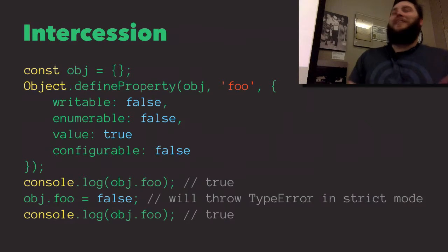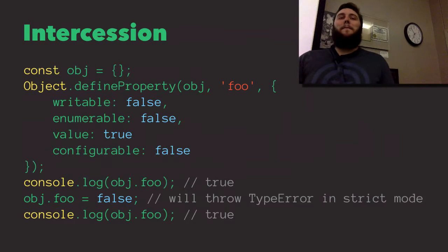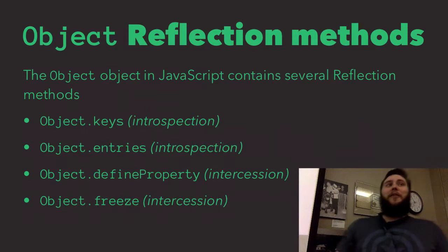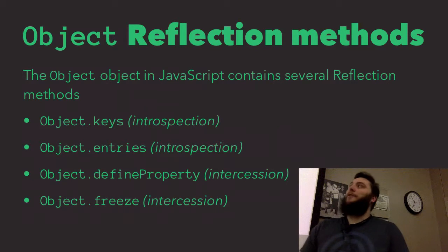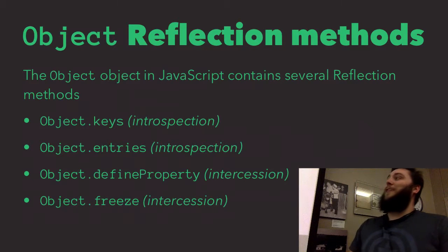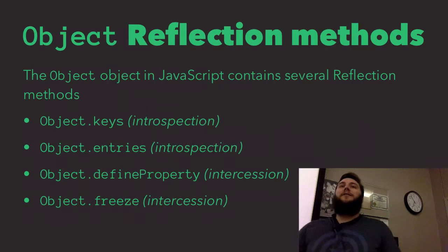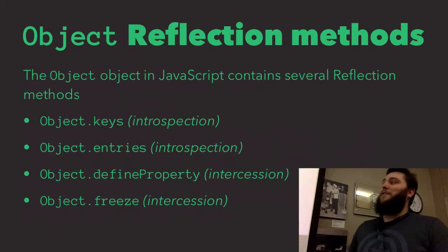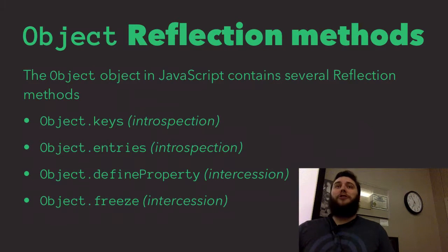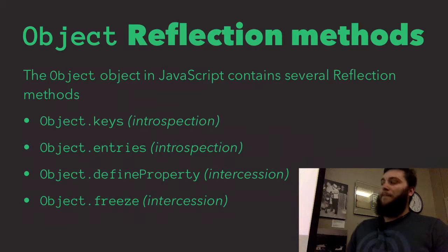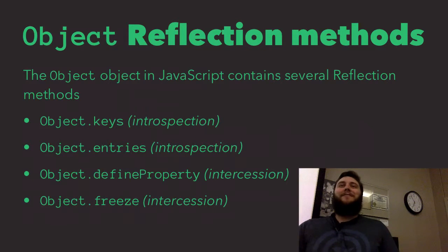There are several metaprogramming methods available just on the Object that everything inherits from in JavaScript. Things like keys and entries give us introspection methods, and then there's defineProperty and freeze, which are more intercession — changing the way those structures behave. That's ES5. That's stuff you can use today. That's boring.